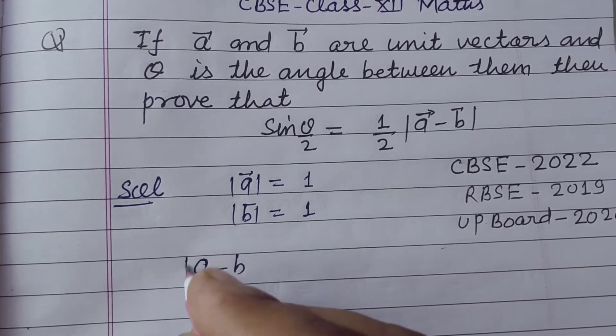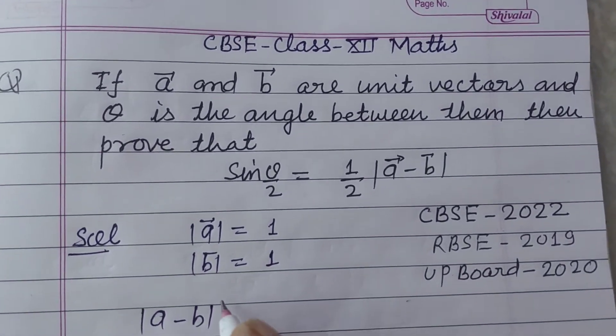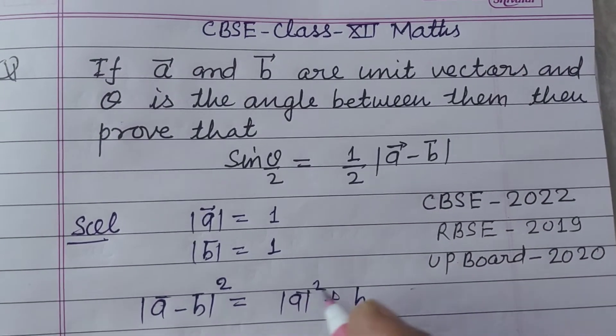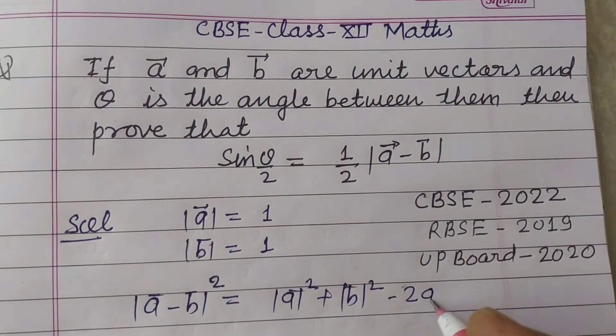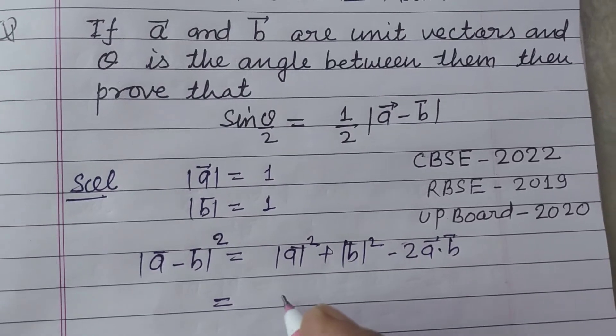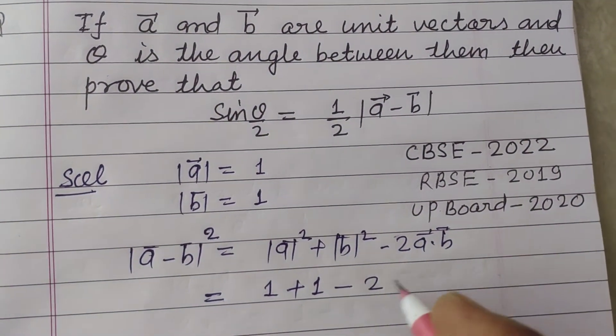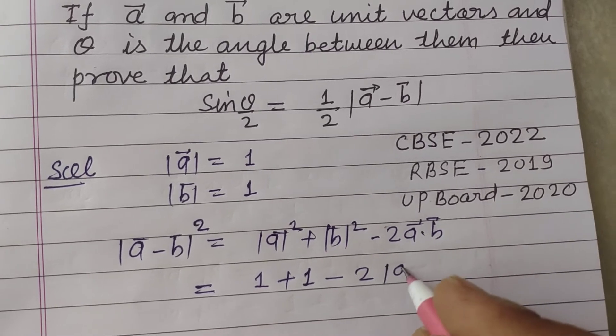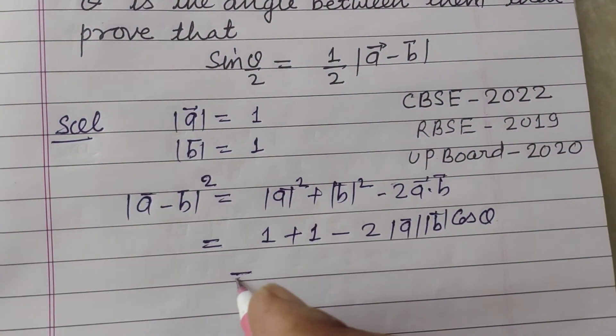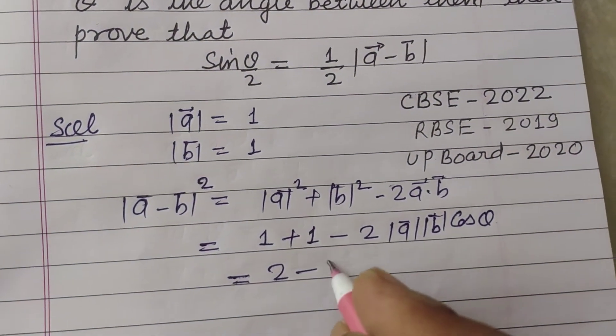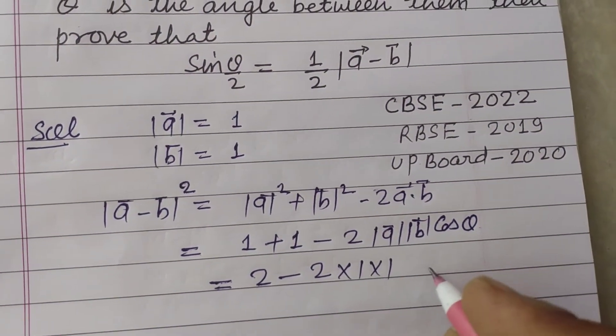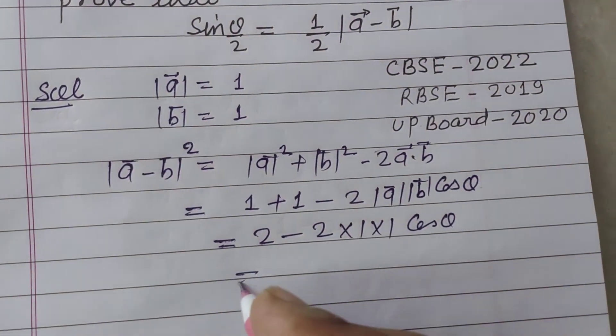So mode of A minus B, first we take whole square of mode of A minus B and this is A square plus B square minus 2 A dot B. So this is 1 plus this is 1, we write it as 2 times mode of A, mode of B cos theta, and this is 2 minus 2 into 1 cos theta.